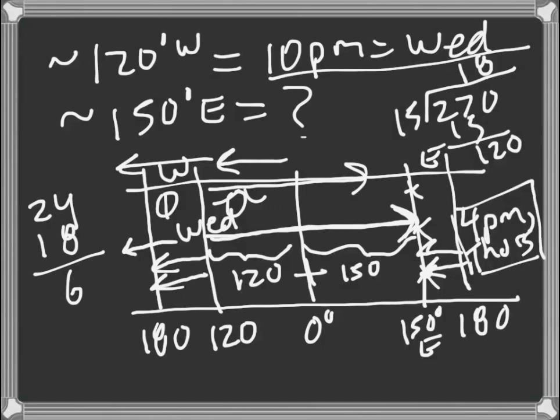We can verify by counting forward. Adding 12 hours to 10 p.m. gives 10 a.m., then adding 6 more hours gives 4 p.m. Because we passed through midnight, the day rolls over from Wednesday to Thursday. Both methods confirm: when it's 10 p.m. Wednesday in San Diego, it's 4 p.m. Thursday for friends in Sydney, Australia.